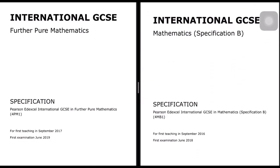Let's see what is given in detail. If you see these two specifications, this is Further Pure Mathematics for IGCSE, and this is Mathematics Specification B. The subject code for Math B is 4MB1, and Pure Mathematics subject code is 4PM1.